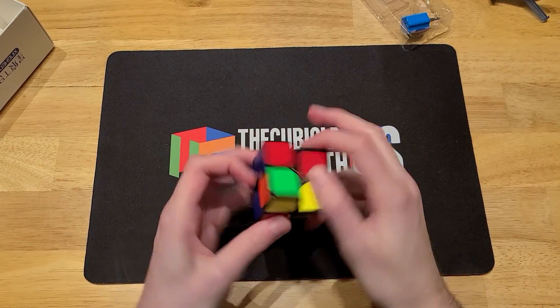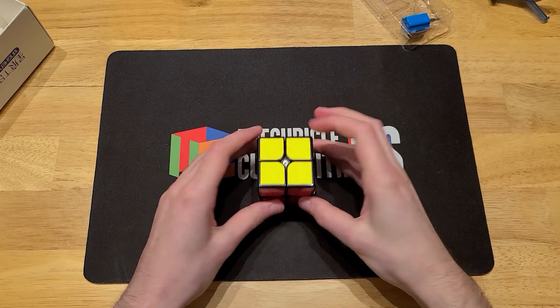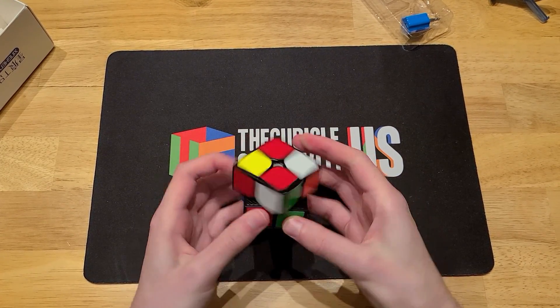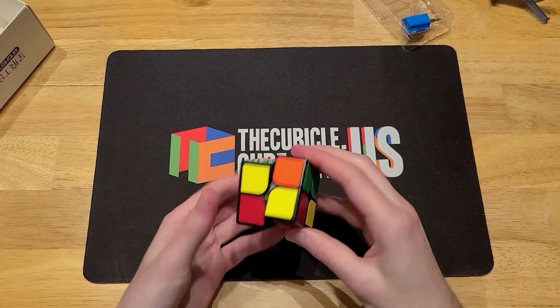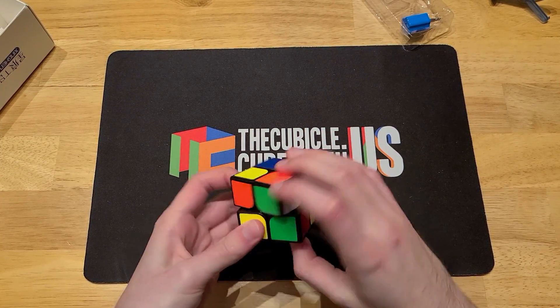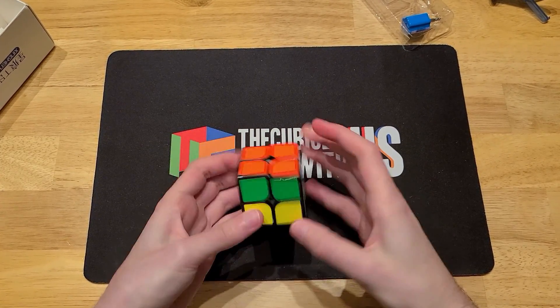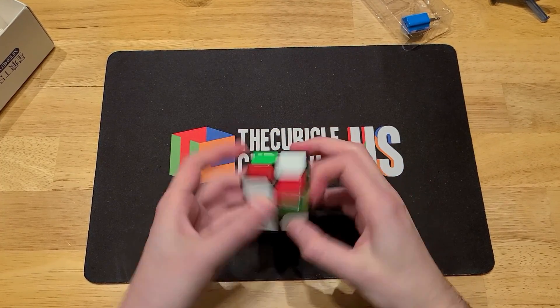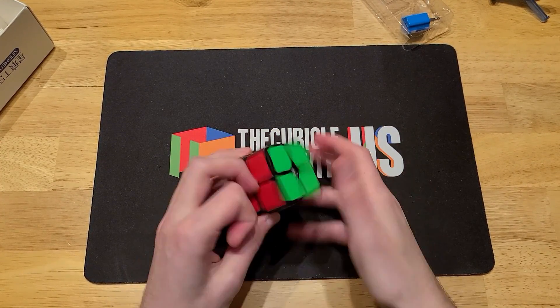Small cuts are pretty effortless, which is nice, but the big problem I had with the previous Xinghen was the catching, just when you're casually solving. I think there's a little bit of that here, but I think the stronger magnets are there to mitigate that issue.